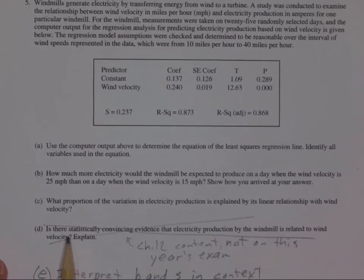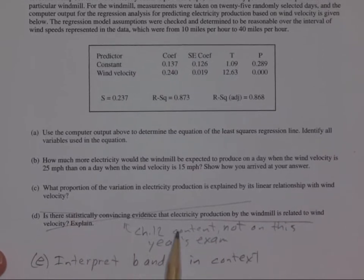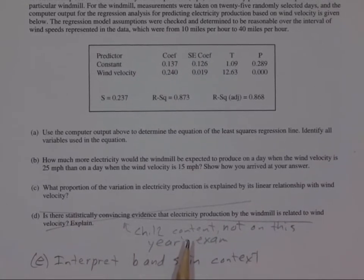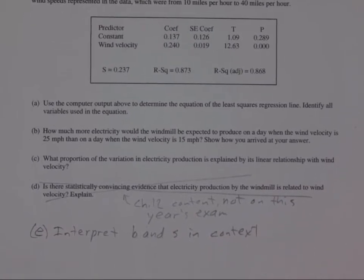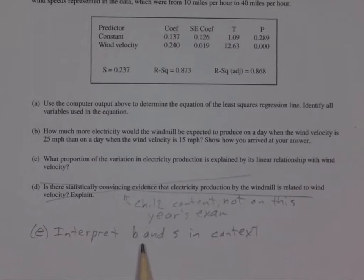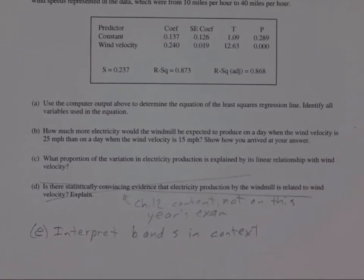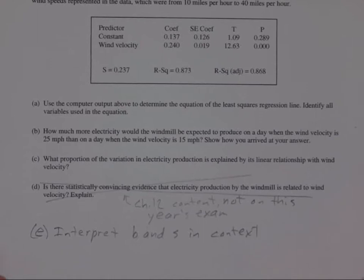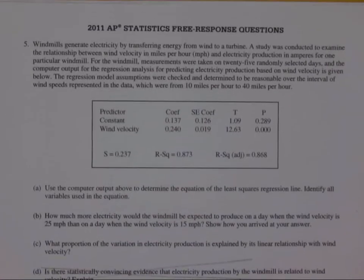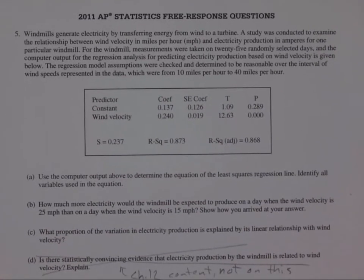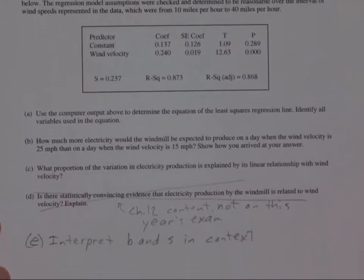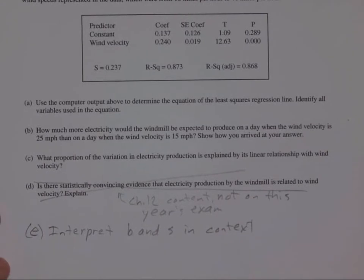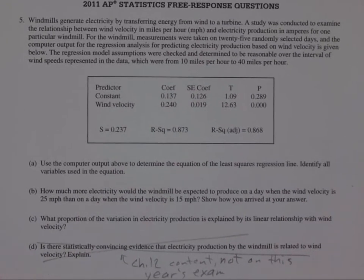What proportion of the variation in electricity production is explained by its linear relationship with wind velocity? Part D is actually content from chapter 12, which we did not do this year and it's not a part of the AP stats exam. So I'm not going to ask you to do that, even though we'll show you the answer. But I want to add this part, and that is to interpret B and S in context, because that is something that could very well be and has been on the exam a lot. If you want to pause the video and give this a try, that would be great.